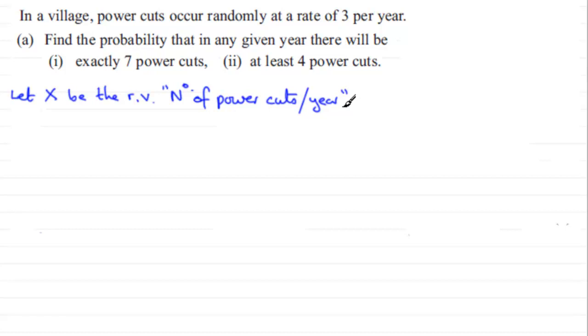And this gives us a clue to what distribution it's going to be. We've got a discrete random variable. Events are independent and they occur at a mean rate in an interval of time. So this is going to tell us that X follows a Poisson distribution. Now, the mean is the only parameter in here, and it's 3 per year. So it's a Poisson distribution with a mean of 3.